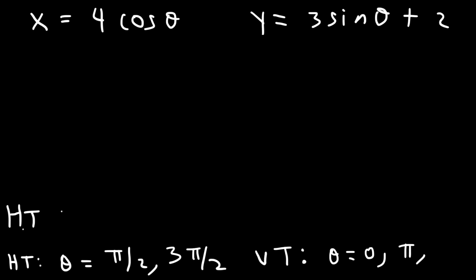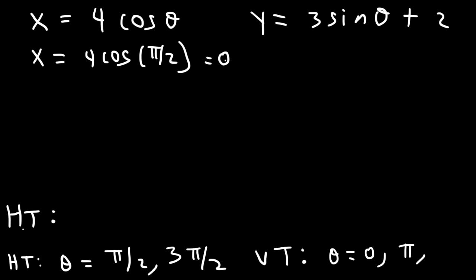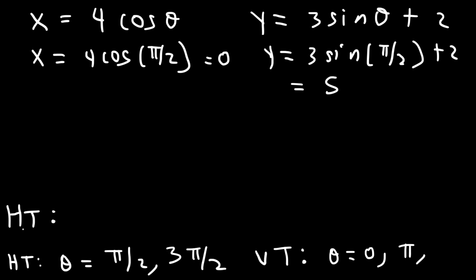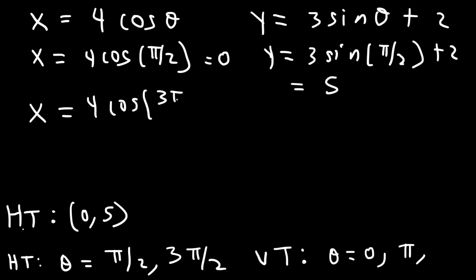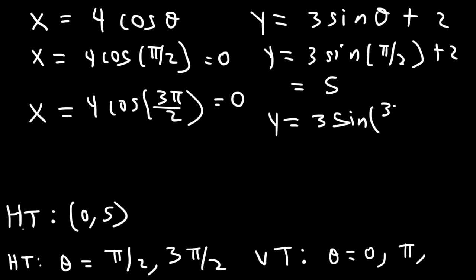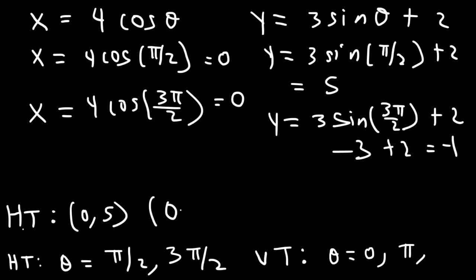Now let's find the points corresponding to the horizontal tangent lines. When θ is π/2: x is 4 cosine(π/2), and cosine(π/2) is 0, so x equals 0. For y: 3 sine(π/2) plus 2 — sine(π/2) is 1, so 3 times 1 is 3, plus 2 gives 5. So we have the point (0, 5). When θ is 3π/2: cosine(3π/2) is 0, so x equals 0. For y: 3 sine(3π/2) plus 2 — sine(3π/2) is negative 1, so negative 3 plus 2 gives negative 1. So we have the point (0, −1).